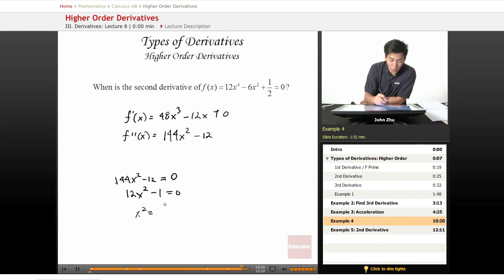So x squared equals 1 over 12. So our answer x is the positive and negative square root of 1 over 12.